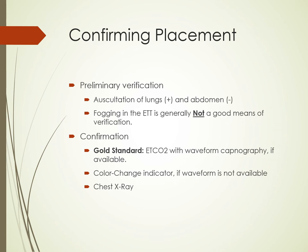Confirming placement is critically important. Preliminary verification includes auscultating the lungs — listening over the lungs for bilateral breath sounds, and listening over the abdomen and not hearing breath sounds there. Fogging in the endotracheal tube has been studied and is not a reliable means of verification — use it only as a tertiary or quaternary indicator, not as your only confirmation method. The gold standard for confirmation is end-tidal CO2 with waveform capnography, which is also helpful during resuscitation as it gives insight into the quality of the resuscitative effort. Use a colorimetric indicator if waveform capnography is not available. Obtain a chest x-ray immediately following intubation to confirm not just proper placement but whether the tube is too deep or too shallow.